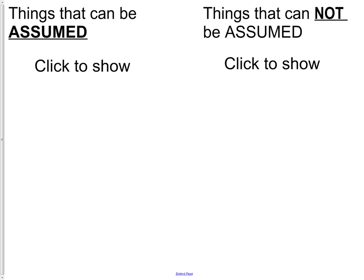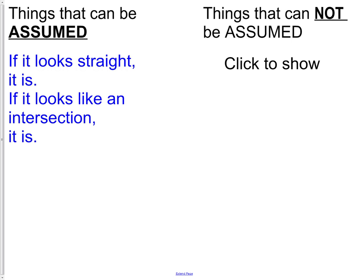Last thing for today, things you can assume in geometry and things you cannot. If something looks to be straight, we can fairly assume that it is. It looks straight, it is straight. The other one is if it looks like two things are crossing, it is fair to assume that they do intersect. So if it looks like an intersection, it is. Now there's a few more things that you cannot.